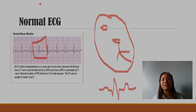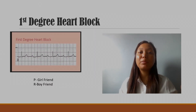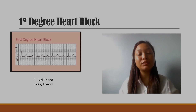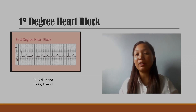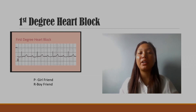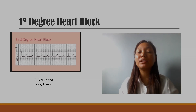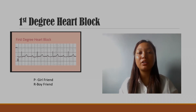Let's see into the graphs. When the electricity is properly conducted in the conduction system, the heart block starts. This is the first degree heart block, second degree heart block, and third degree heart block.